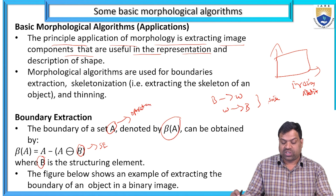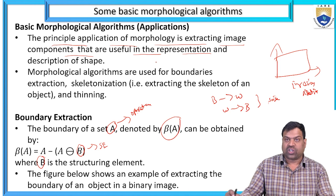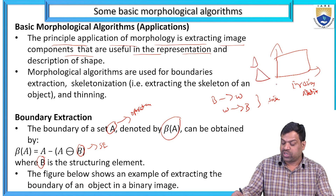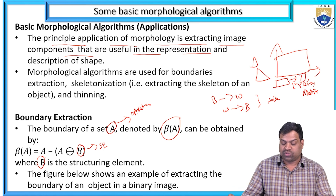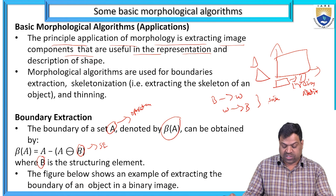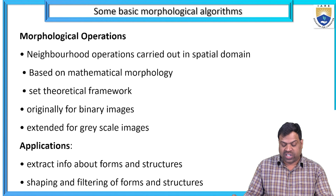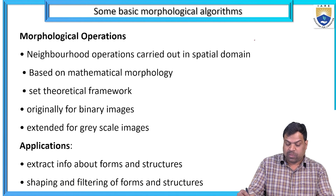Morphological algorithms extract image components useful in the representation and description of shape. The morphological algorithms are used for boundaries extraction, skeletonization — extracting a skeleton of an object — and thinning. That is the example of extracting the boundary of an object in a binary image. The neighborhood operations are carried out in spatial domain based on mathematical morphology, set theoretical framework, and originally for binary images extended for greyscale images.